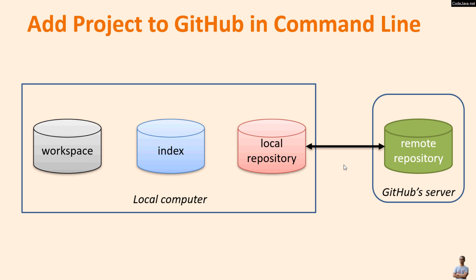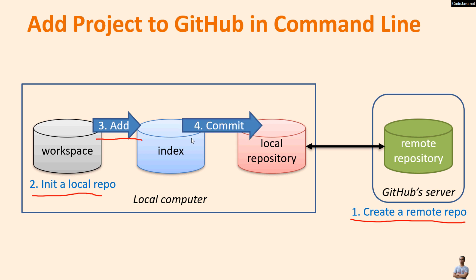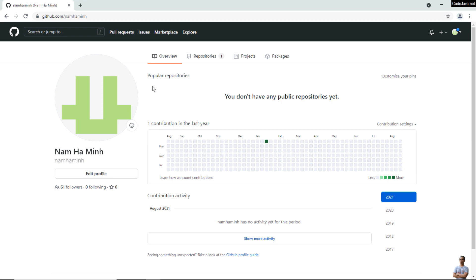Here are the steps you need to follow to add an existing project from your local computer to GitHub in the command line using Git commands. First, create a new remote repo on the GitHub server. Then initialize a new local repo for your project. Then add your project files to the index of the local repo. Then commit your project files to the local repo. Then link your local repo with the remote repo on GitHub, and finally push your project files from the local repo to the remote repo.